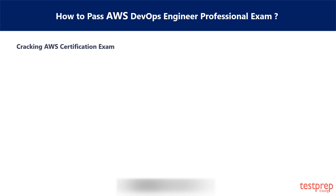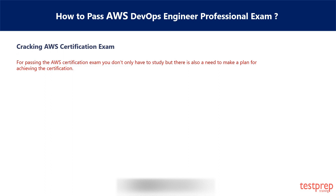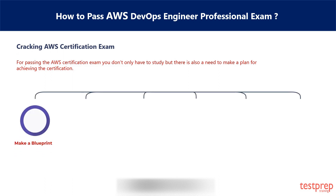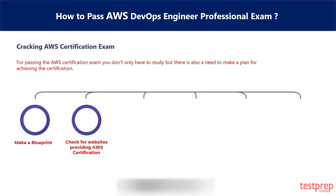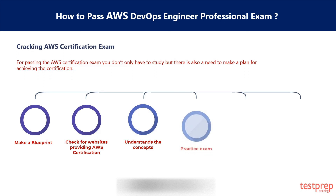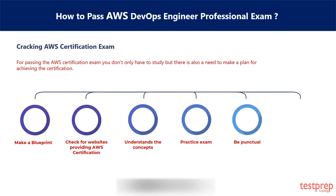Cracking the AWS Certification Exam: For passing the AWS Certification Exam, you don't only have to study — there is also a need to make a plan for achieving the certification. Steps include: 1. Make a blueprint. 2. Check for websites providing AWS Certification resources. 3. Understand the concepts. 4. Practice exams and tests. 5. Be punctual. 6. Give the exam.